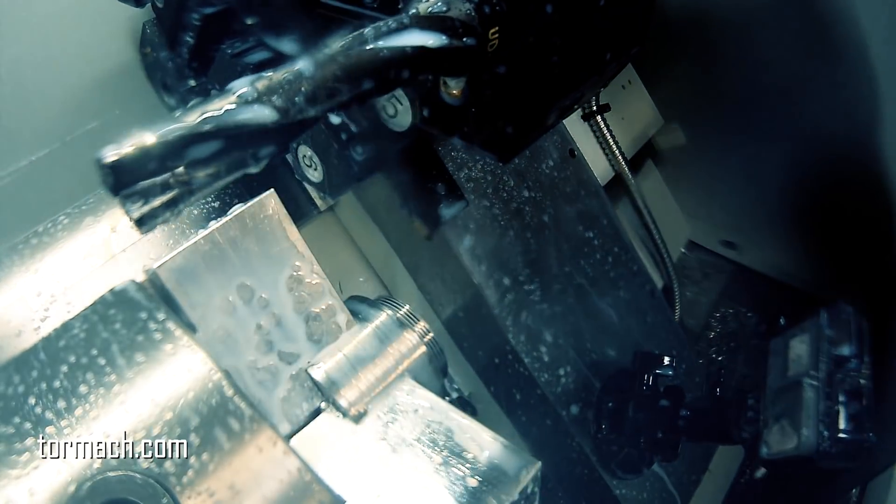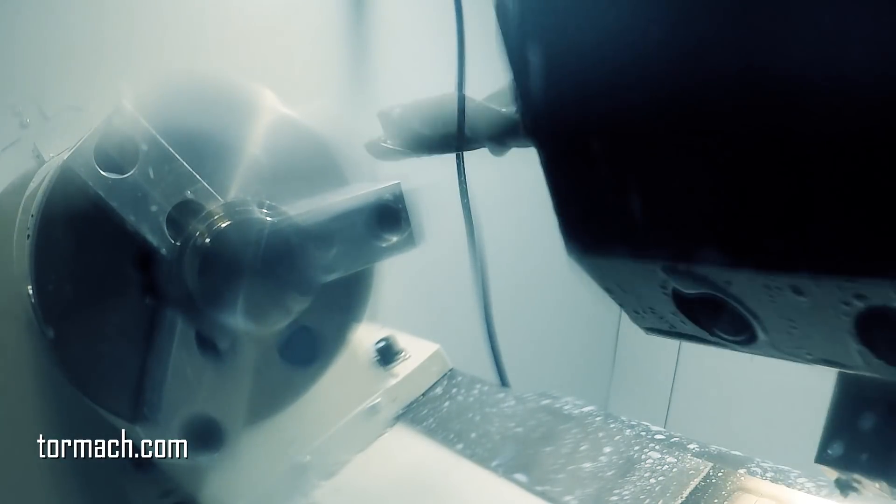After that we grabbed our OD threading tool and went ahead and cut the thread. This is an M44 by 1.5 thread. So we went ahead and cut this all just single point. I didn't have a thread gauge or anything, so I kind of just cut the first side with the plan of fitting the second side to it.